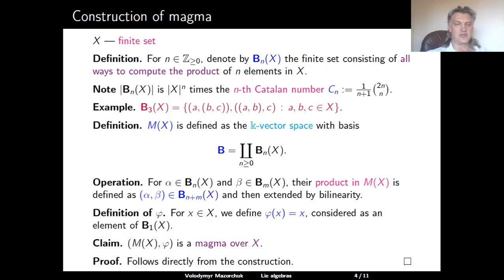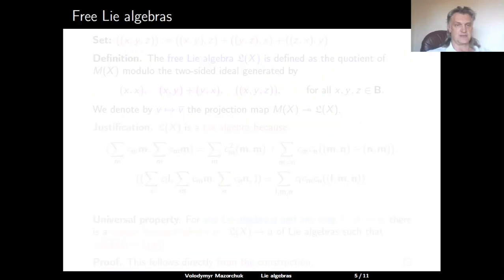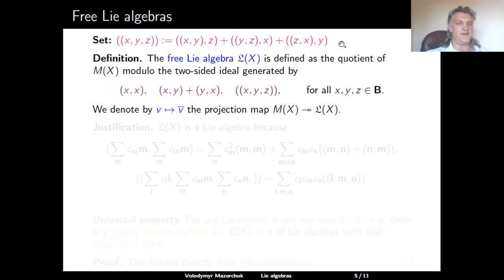Now we want to construct a universal object for Lie algebras: free Lie algebras. For simplicity, let us denote by double bracket of x, y, and z the expression corresponding to the Jacobi identity used in the definition of Lie algebra. We define the free Lie algebra L(x) as the quotient of the magma m(x) modulo the two-sided ideal generated by: the bracket of x and x for any element x in our basis b; the sum of brackets of x and y and y and x for any pair x and y; and the double brackets of x, y, and z for any triple x, y, z of elements in b. We denote by v mapping to overline v the projection from m(x) to L(x). To justify the name, we first note that L(x) is a Lie algebra.